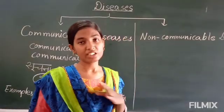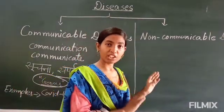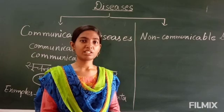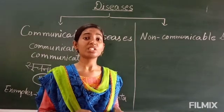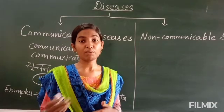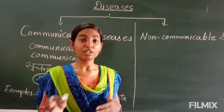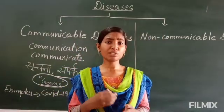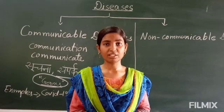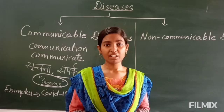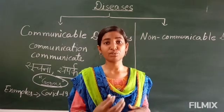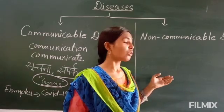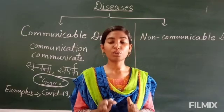Now let's come to the second one: non-communicable disease. This non-communicable is just the opposite of communicable. Those diseases which are not passing on from one person to another person are known as non-communicable disease. Now the question comes: if it is not passing, then how does it happen to a person? If a sick person is not touching and the disease is not passing, how are these diseases happening?